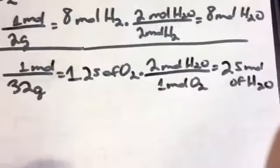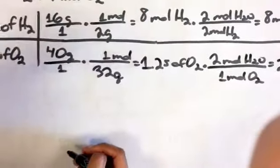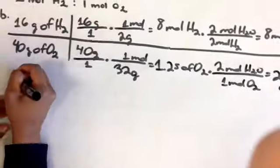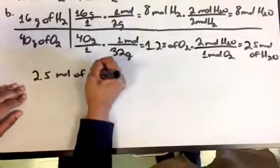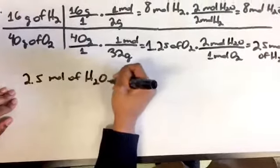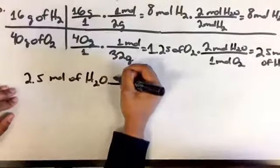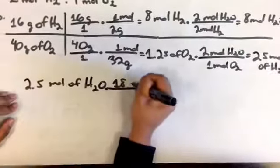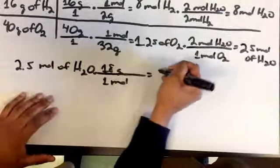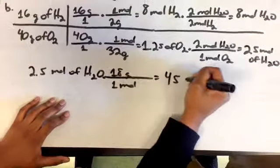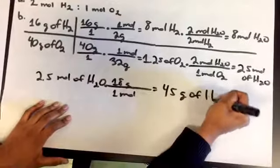So now since they're asking for grams, you would have to multiply the number of moles by the molar mass of H2O. So you have 2.5 moles of H2O times 18 grams over 1 mole, and you would get 45 grams of H2O.